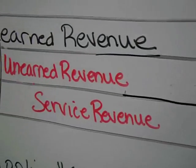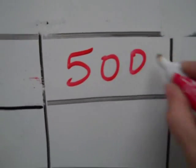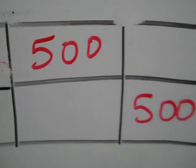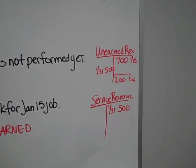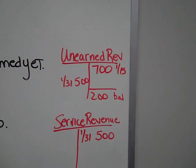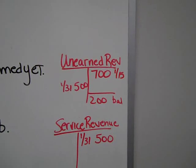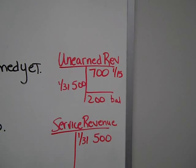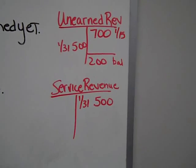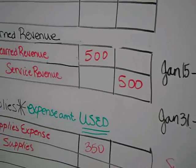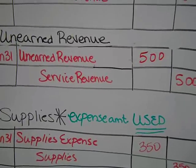We will make an adjusting entry for the amount of revenue that has now been earned. We have now earned $500 of the revenue from January 15th. Our T-account will now have a debit to unearned revenue, so our balance in unearned revenue at the end of the month is $200 — there is still $200 worth of work from January 15th we have not completed. Our service revenue now has $500, which is the amount of revenue we have earned. The unearned revenue adjusting entry at the end of the period adjusts for the amount of revenue we have now earned.